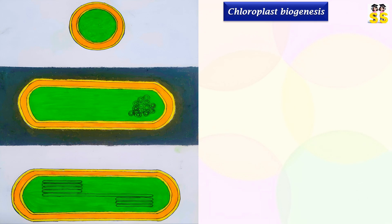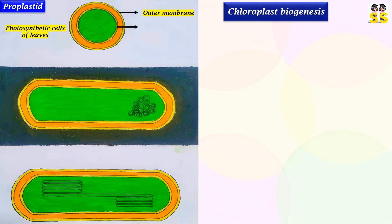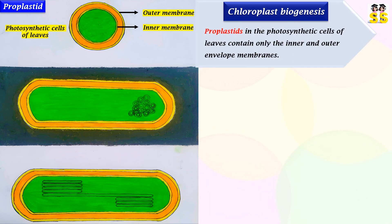First and foremost, proplastids are primarily found in the photosynthetic cells of leaves, and they contain only outer and inner membranes. If the plant is not exposed to light and grows in complete darkness, it is characterized by a non-green plastid called an etioplast in plant tissues.